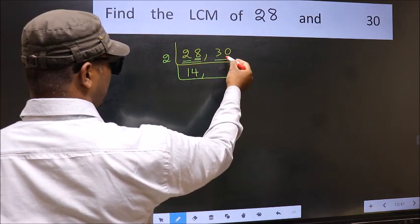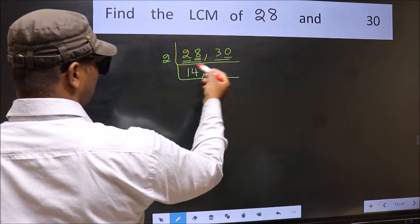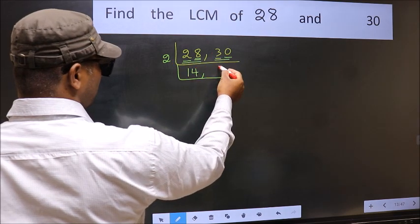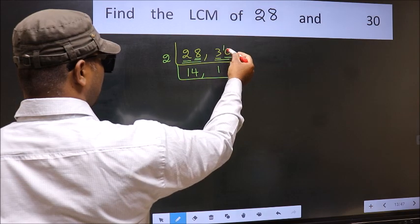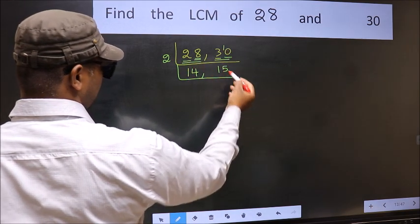Now the other number 30, last digit 0, so this is divisible by 2. First number 3, a number close to 3 in 2 table is 2, 1's 2. 3 minus 2, 1, 1 carried forward 10. When do we get 10 in 2 table? 2, 5's 10.